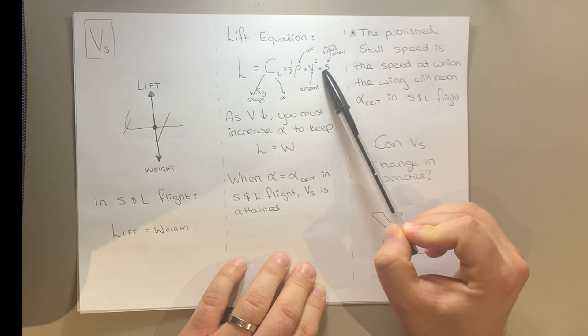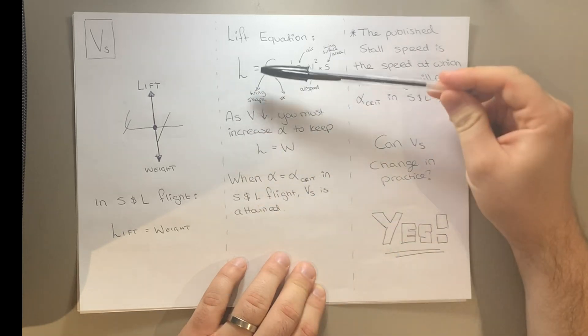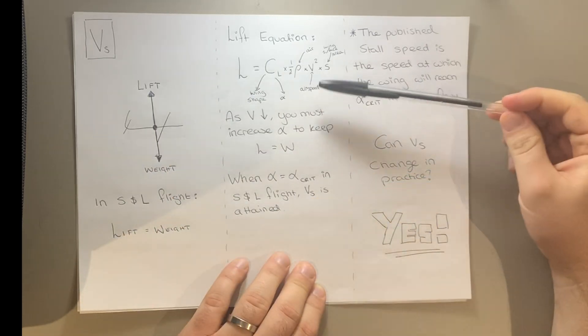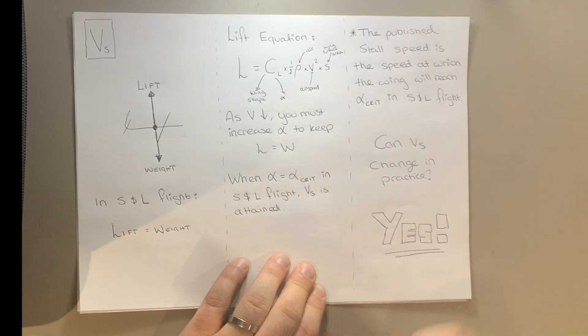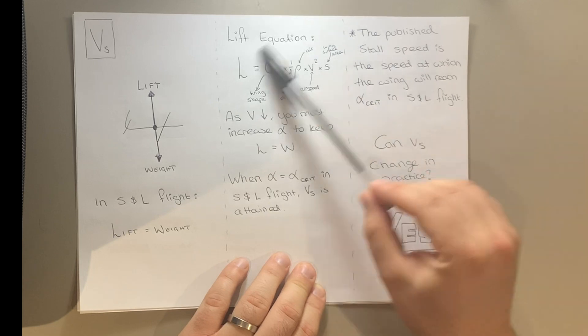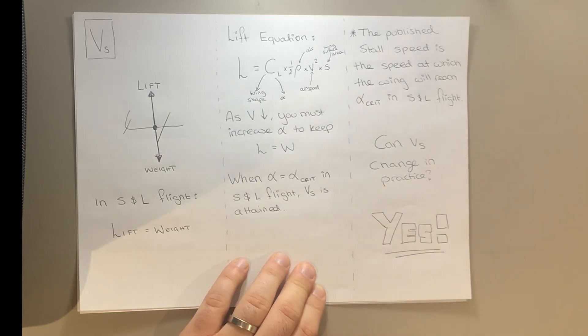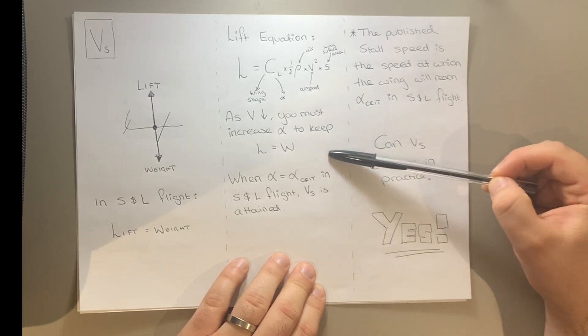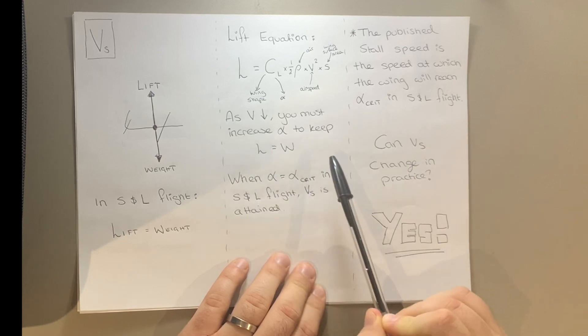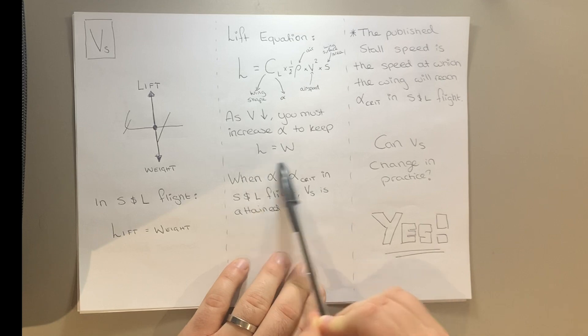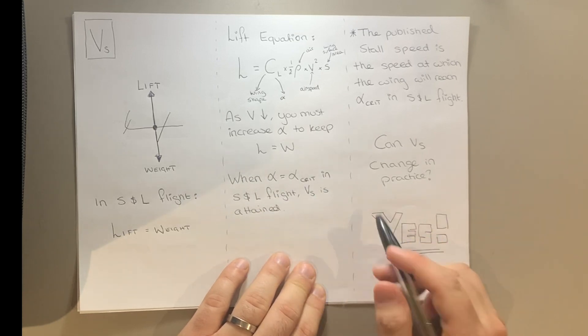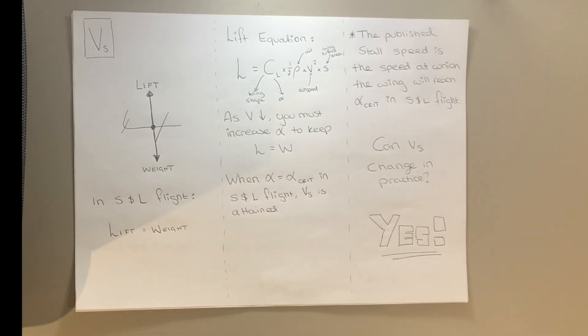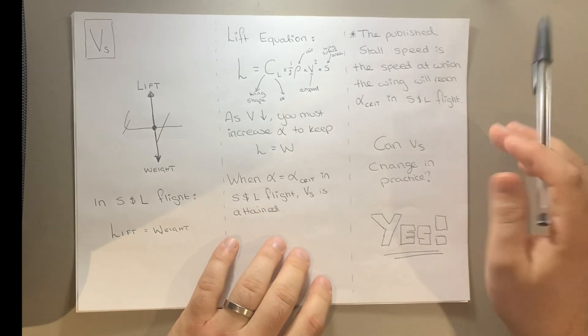As we reduce speed, we'll see that lift reduces. However, we want to keep it the same as weight to maintain straight and level flight. So the only way to do that is to increase angle of attack, because as we saw earlier in the graph and in this equation, increasing angle of attack increases lift. If we slow down further, we'll have to increase alpha more and more until we hit the critical angle of attack. The speed at which you hit critical angle of attack in straight and level flight is what we know as the stall speed. So the published stall speed is the speed at which the wing will reach critical angle of attack in straight and level flight.